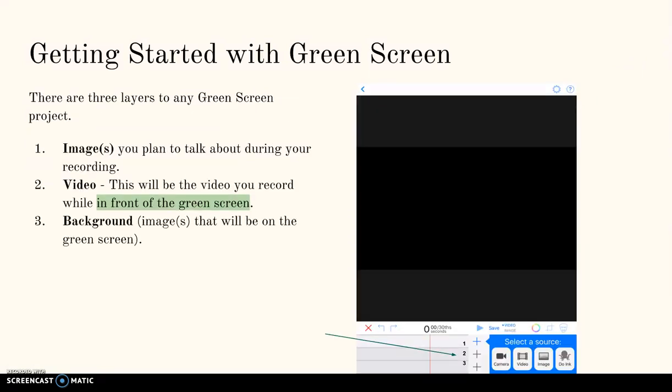There are three layers to any green screen project. Layer 1 is for images which you plan to talk about during your recording. Layer 2 is for the video which you will be creating while standing in front of the green screen. And layer 3 is for the background image which will replace the green screen behind you.